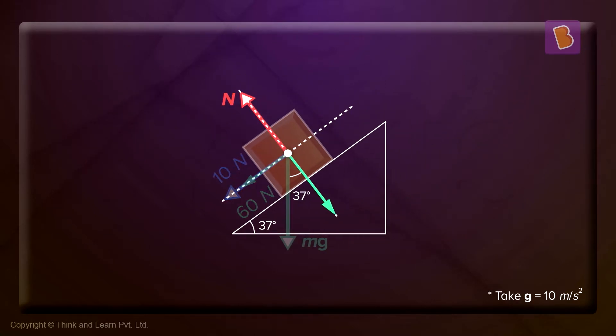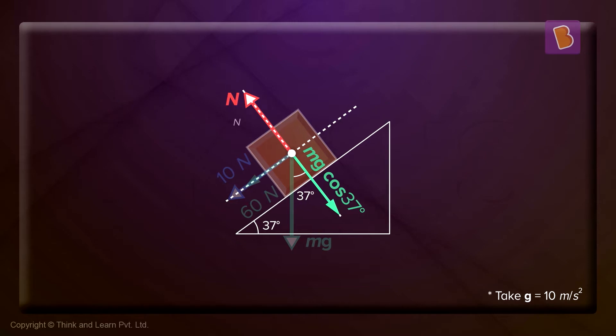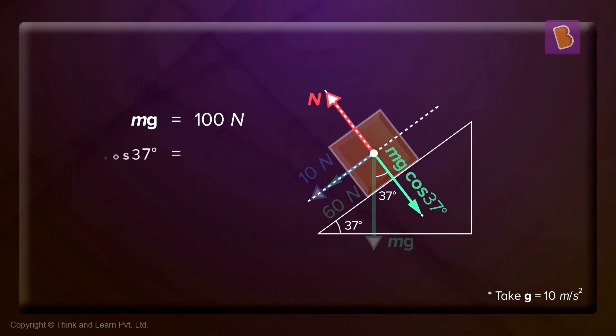Now, let's go to the y-axis. In the y-axis, you have only the normal reaction acting upwards, and you have a component of mg acting that way, right? That is mg cos 37. Now, you know the value of mg is 100, and mg cos 37 will become how much? Yes, 80 Newtons.